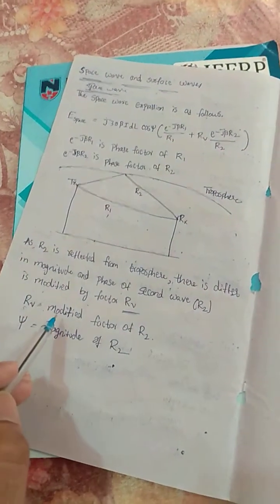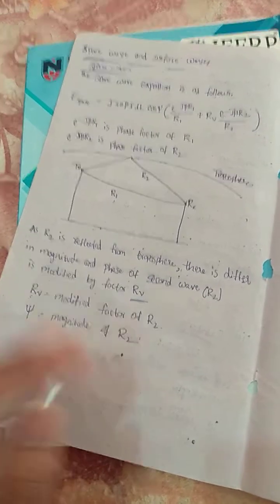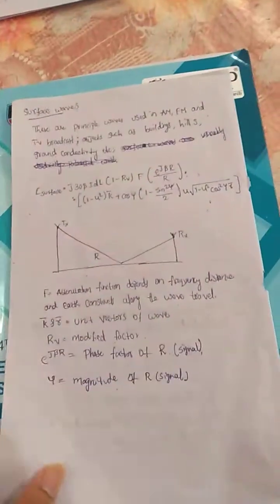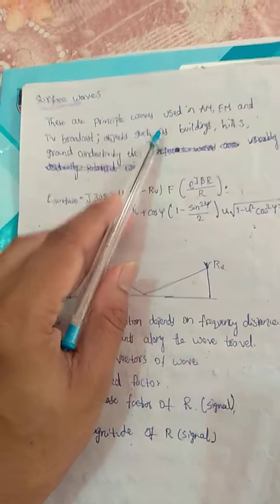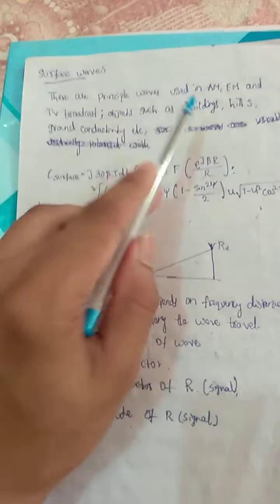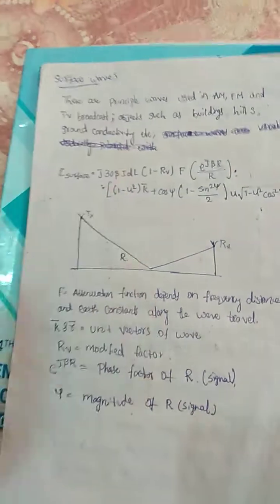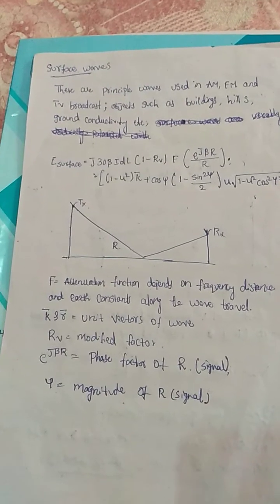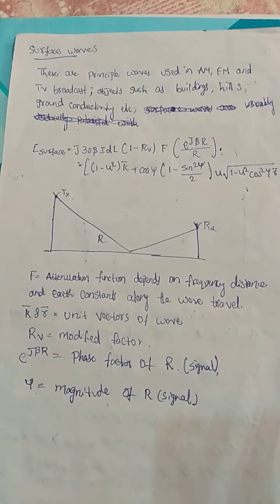Next, surface waves. Surface waves are the principal waves used in AM, FM, and TV broadcast. Objects such as buildings, hills, ground connectivity, etc. cause surface waves to be heavily reflected from these structures.